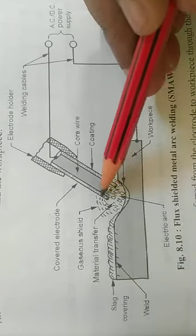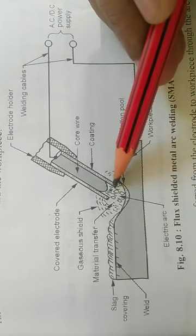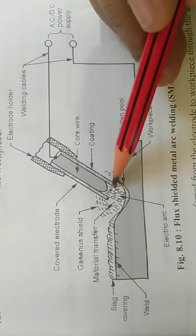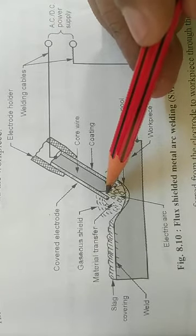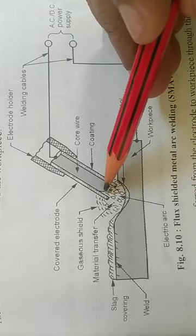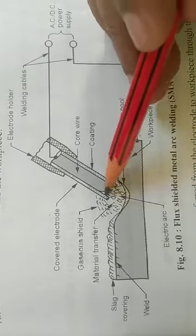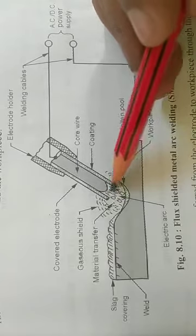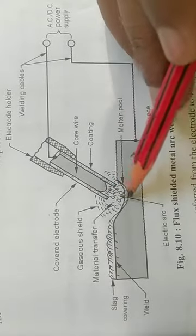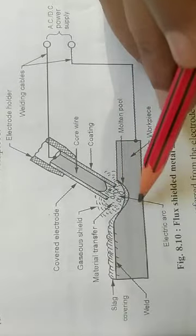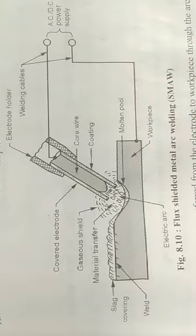Since this flux coating is melting at a slower rate, this prevents the arc from diverging. It concentrates the arc to a small area, and therefore deeper penetration of the weld is achieved.